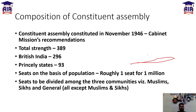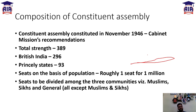The basis for allocation of seats was population - 1 seat per 1,000,000 people. This is an important point. These seats were divided among 3 communities: the first community is Muslim, the second is Sikh, and the third is General.